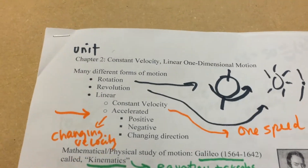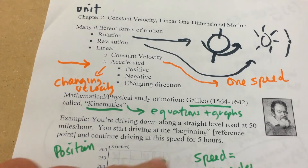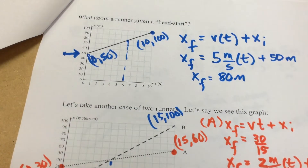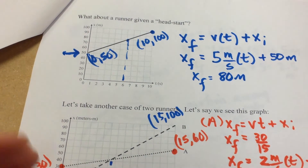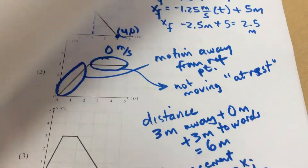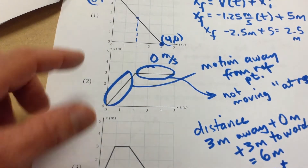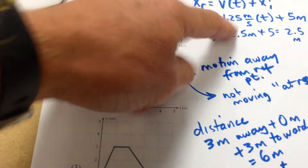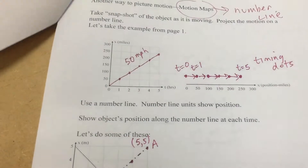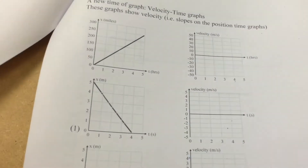We're talking about objects moving at one velocity. We talked about position-time graphs being diagonal and we can compare different runners or different objects, answer some questions, come up with equations. Sometimes our position-time graphs have a negative slope or negative velocity. Sometimes we have objects at rest. So let's scroll here to page 7.